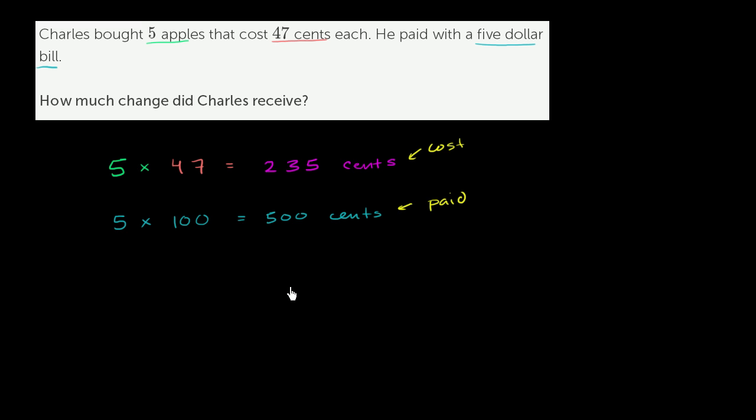So we could figure out how much change he needs to get back in terms of cents. So he paid 500. He paid 500. The cost was 235. So we just need to subtract. And you might be able to do this in your head, but in case you can't, we can solve this. We can do this by regrouping.